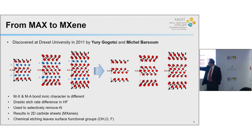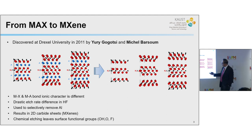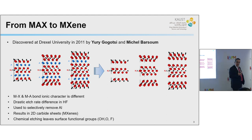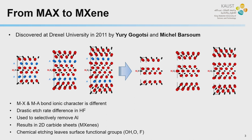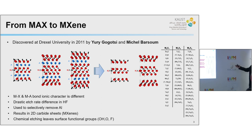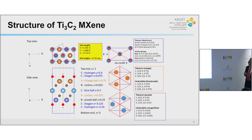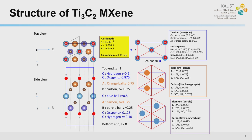Depending on the starting MAX phase — for example, for 2-1-1 — you end up with a corresponding MXene. Because this is done in solution chemistry, the chemistry used for etching the aluminum also creates bonds on the MXene surfaces determined by the nature of the etchant. Commonly used etchants are aqueous, so you end up with hydroxyl, fluorine, or oxygen on the surface of MXenes. These functional groups are very important for determining how MXenes behave in different applications.